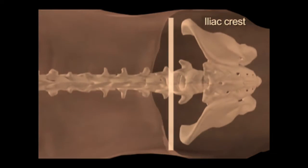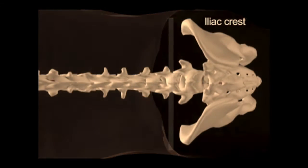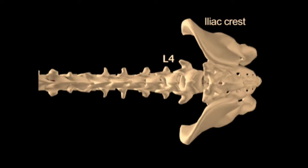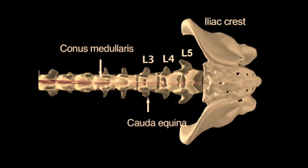A line is visually drawn between the superior aspects of the iliac crest and intersects the midline at the L4 spinous process. Insert the needle in the interspace between L3 and L4 or L4 and L5 since this location is below the termination of the spinal cord.